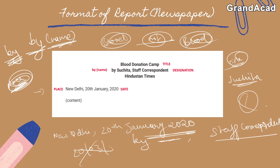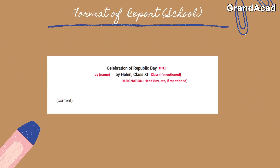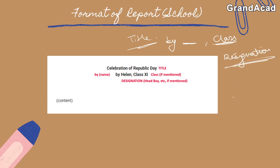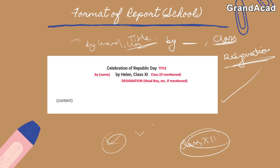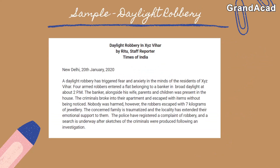For a school magazine report, write the title, then 'by' followed by your name, and then your class if mentioned. Include your designation only if it is given in the question — for example, head boy or council member. Do not add a designation on your own if the question does not explicitly mention that you hold a position.